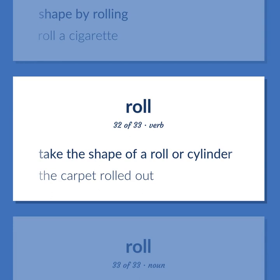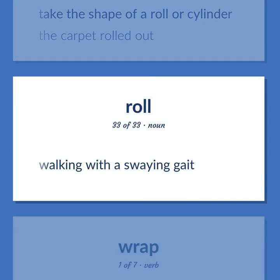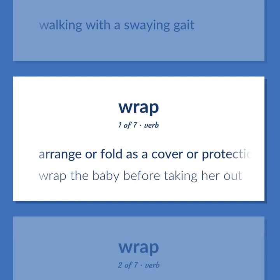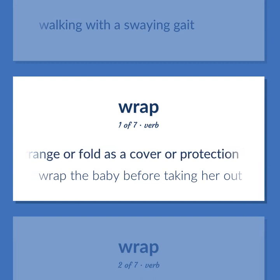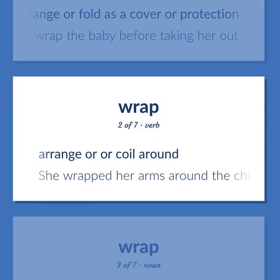Take the shape of a roll or cylinder — the carpet rolled out. Walking with a swaying gait. WRAP: Arrange or fold as a cover or protection — wrap the baby before taking her out. Arrange or coil around — she wrapped her arms around the child.